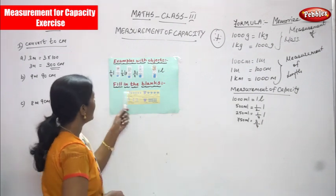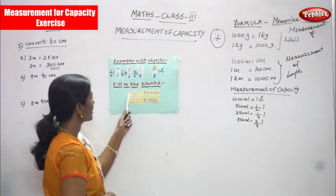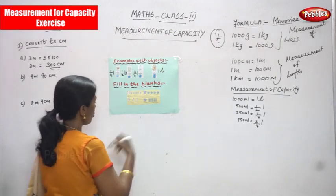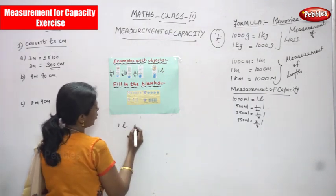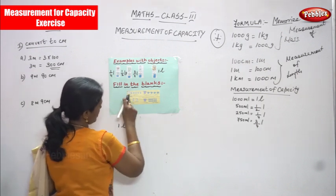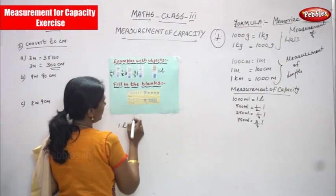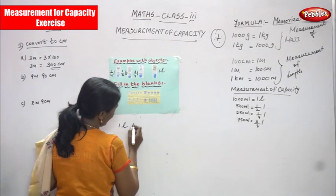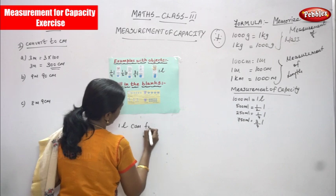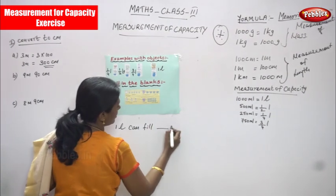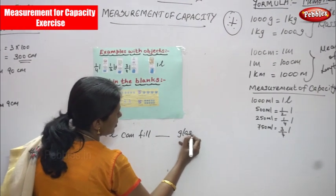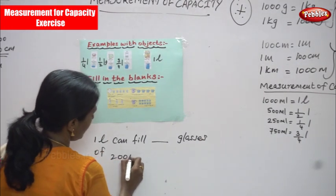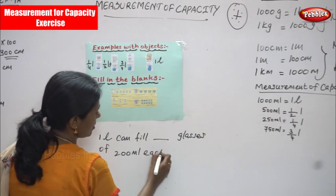Now we are going to see fill in the blanks. This is: one liter can fill dash glasses of 200 ml each. That is one liter — it's a jug, a one liter jug. So fill one liter can fill dash glasses of 200 ml each. This is the question.